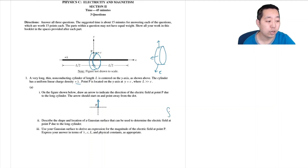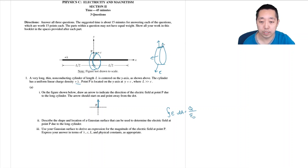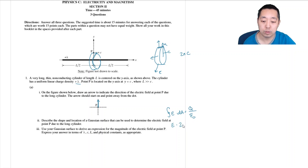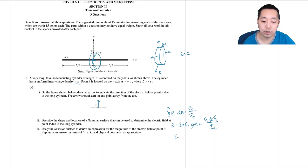By Gauss's Law, the integral of E·dA equals the charge enclosed divided by epsilon naught. Say this Gaussian cylinder has a width of delta x. The radius is C, so the circumference is 2πC, and the area of the side band is 2πC times delta x. The enclosed charge in that delta x region is lambda times delta x, since lambda is a linear charge density. The delta x terms cancel, giving electric field E equals lambda over 2πCε₀.